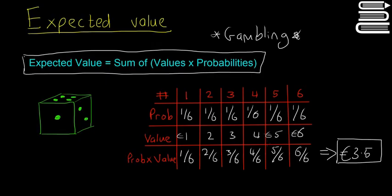Obviously you can't win 3.5 euros any individual time because you can only get one, two, three, four, five, or six euros. But on average if you average everything up after a hundred goes, it'll be as if you got 3.5 every single time. That's the expected value.